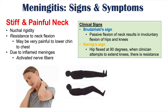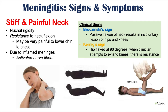The other clinical sign is Kernig's sign. Kernig's sign is when a clinician has a patient lying flat with their hip flexed at a 90-degree angle, and the clinician tries to extend the patient's knee and there is resistance — that is Kernig's sign. These are two clinical signs that can occur in patients with meningitis, although they don't necessarily have to be present.